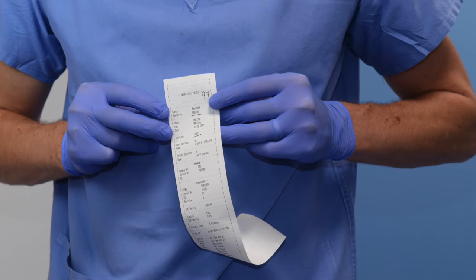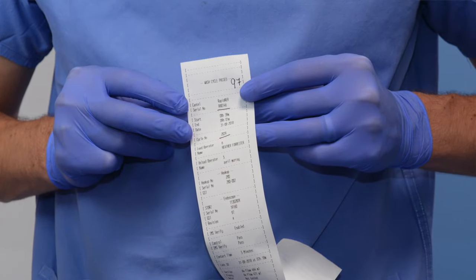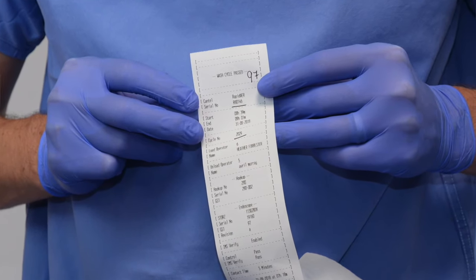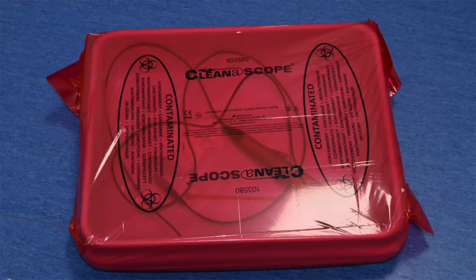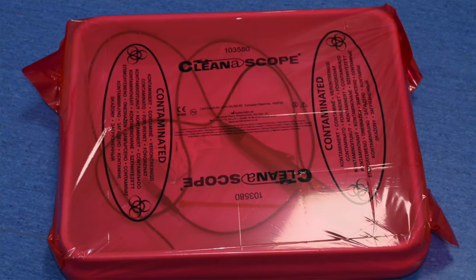When packaging the fiber optic scope back in its box, put patient information along with the date and time the scope was used. On this piece of paper you'll find a cycle number and serial number which should also be documented. The red cover then goes on the box. The box is delivered to the endoscopy used goods for further decontamination.